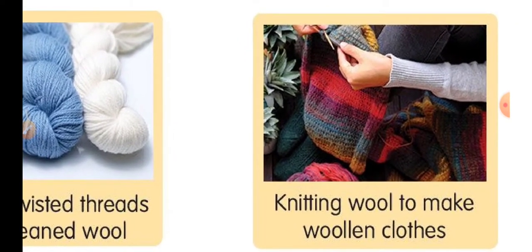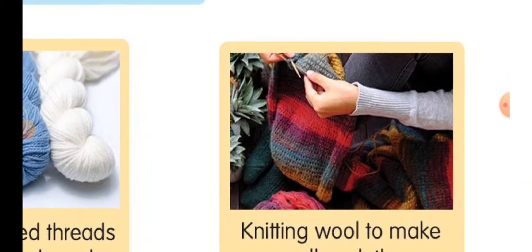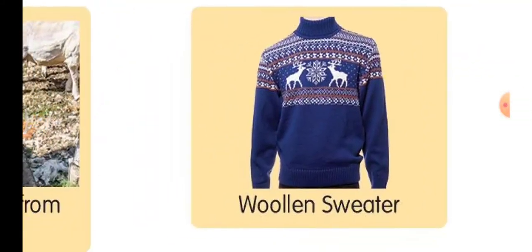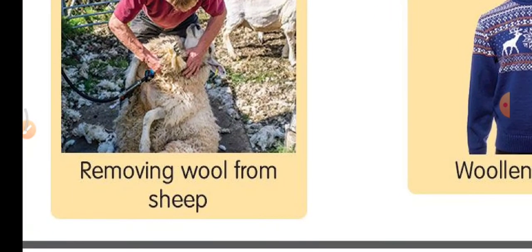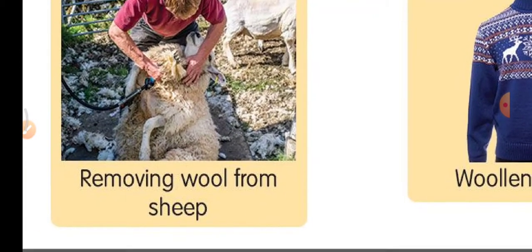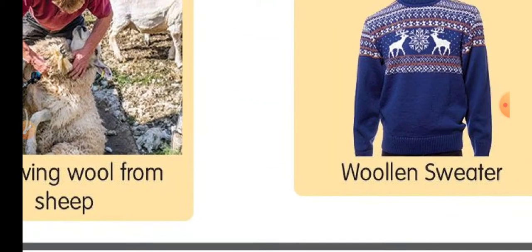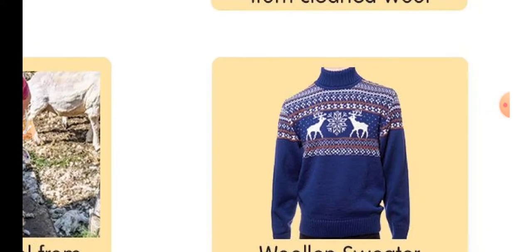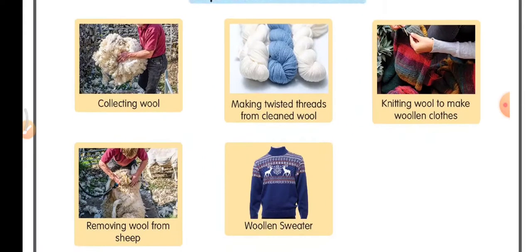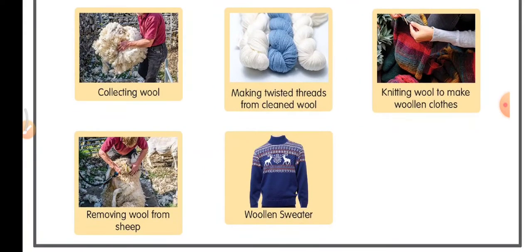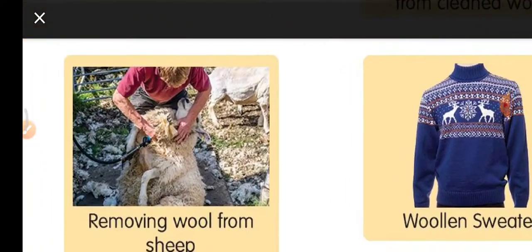The third step is knitting wool to make woolen clothes. The fourth picture shows removing wool from sheep and the finished woolen sweater. Let us now put these steps in the correct order.